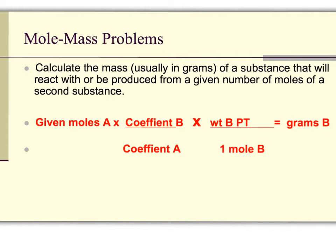The equation that will be used is we will have the given moles of chemical A. We will use our coefficients from our balanced equation. The coefficient for chemical A will be on bottom. The coefficient for chemical B will be on top. We will multiply that times the weight of chemical B from the periodic table over one mole of chemical B.